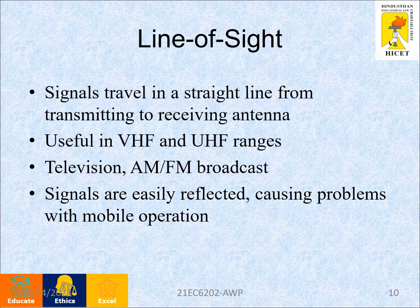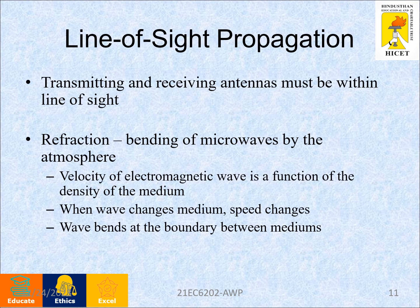Signals are easily reflected, causing problems with mobile operations. In line of sight propagation, the transmitting and receiving antenna must be in line. One important mechanism in line of sight propagation is refraction. Refraction occurs when there is bending of microwaves by the atmosphere. The velocity of an electromagnetic wave is a function of the density of the medium. When a wave changes medium, the speed also changes and it bends at the boundary between mediums.